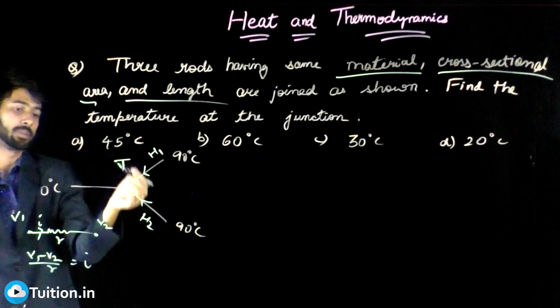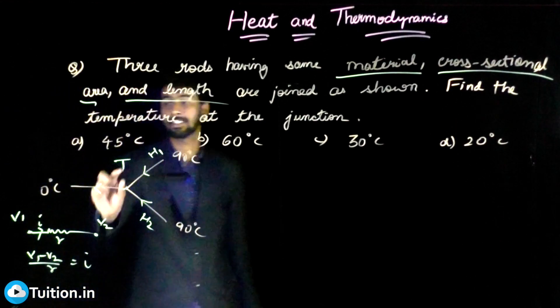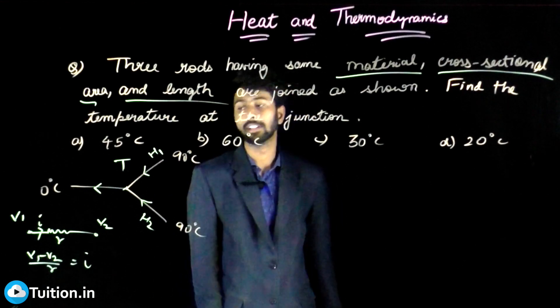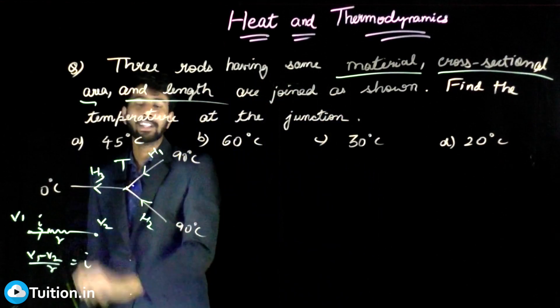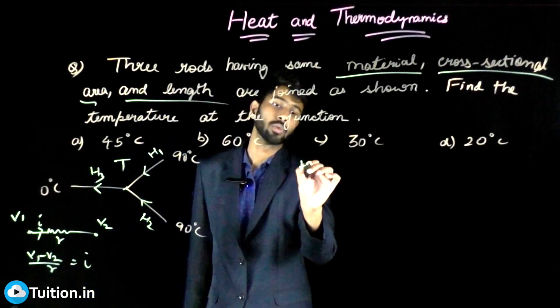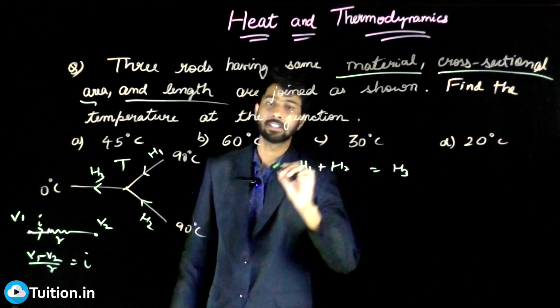which will flow in this direction from here to here, and there will be some heat current which will flow from here to here, assuming that this is greater than T, greater than 0. So let this be H3. Very evidently, you can say from here that H1 plus H2 should be equal to H3, just the way you add currents.